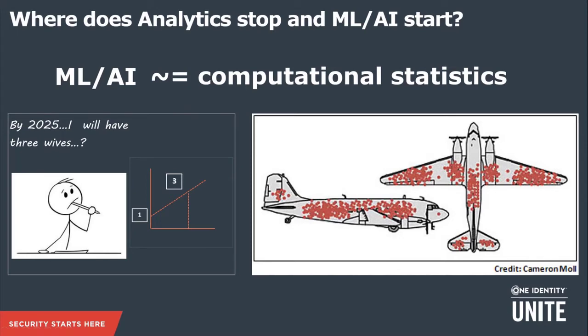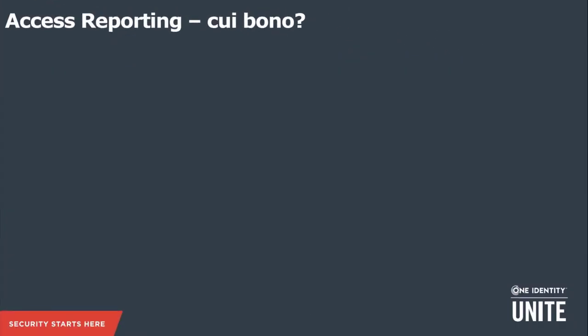That sets the stage for an overview of where we are with machine learning, AI, and data interpretation. Now let's move on to talk specifically about Identity Manager, breaking it down into those three categories: reporting, recommending, and offering insights and alerting.